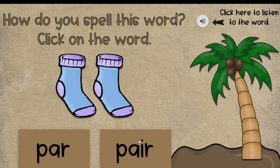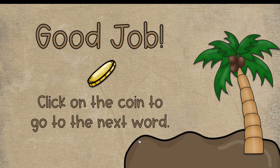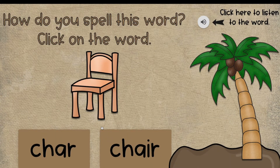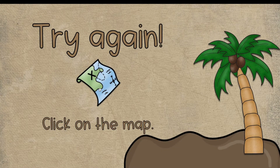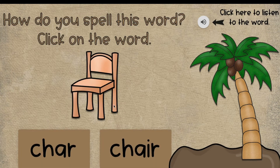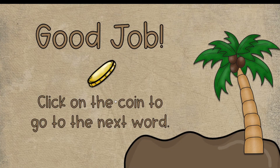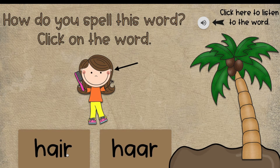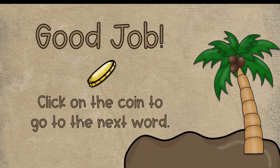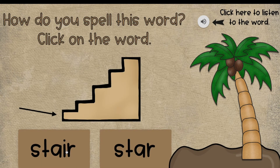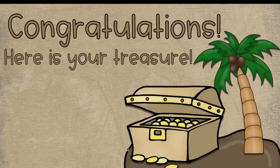If they choose the correct answer, they're going to earn a gold coin and then progress to the next slide. If they answer incorrectly, it will lead them to a map that says try again. Clicking on the map will lead them back to the same word to give it another shot. Once they work through all of the spelling words, they're going to get to that treasure box at the end.